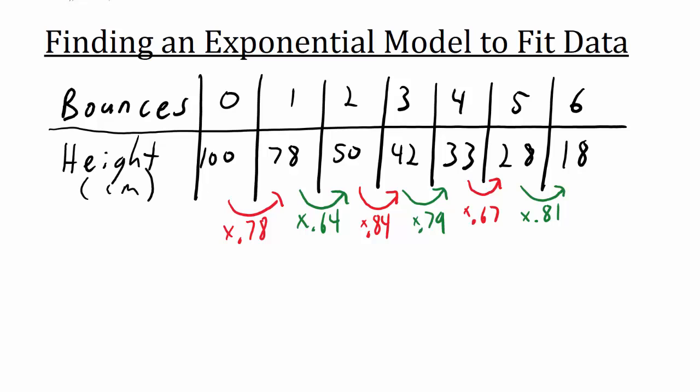If the data shows an exponential pattern, then we can use these ratios to estimate a multiplier for our equation. Let's find the average of these ratios to estimate the common ratio.